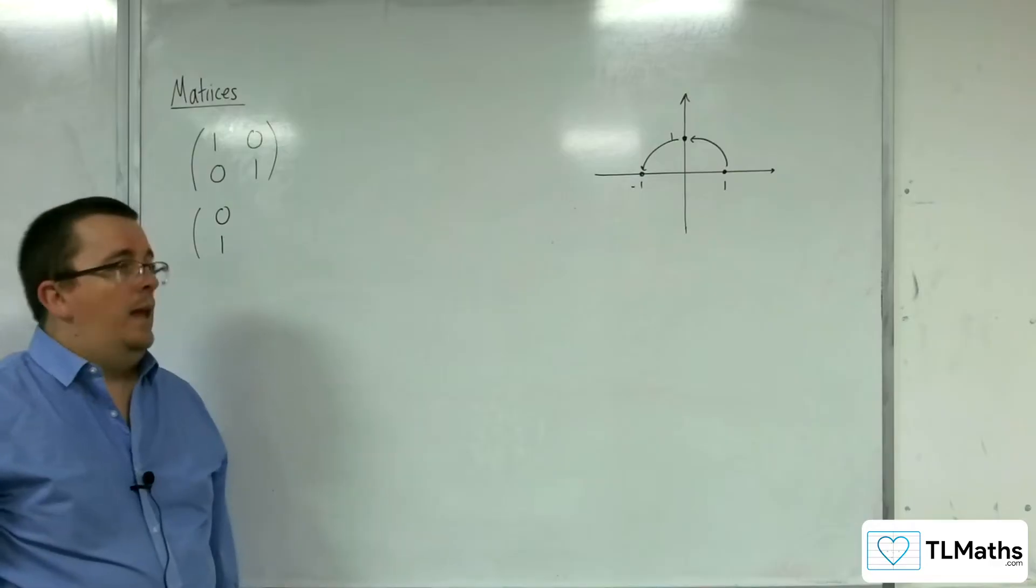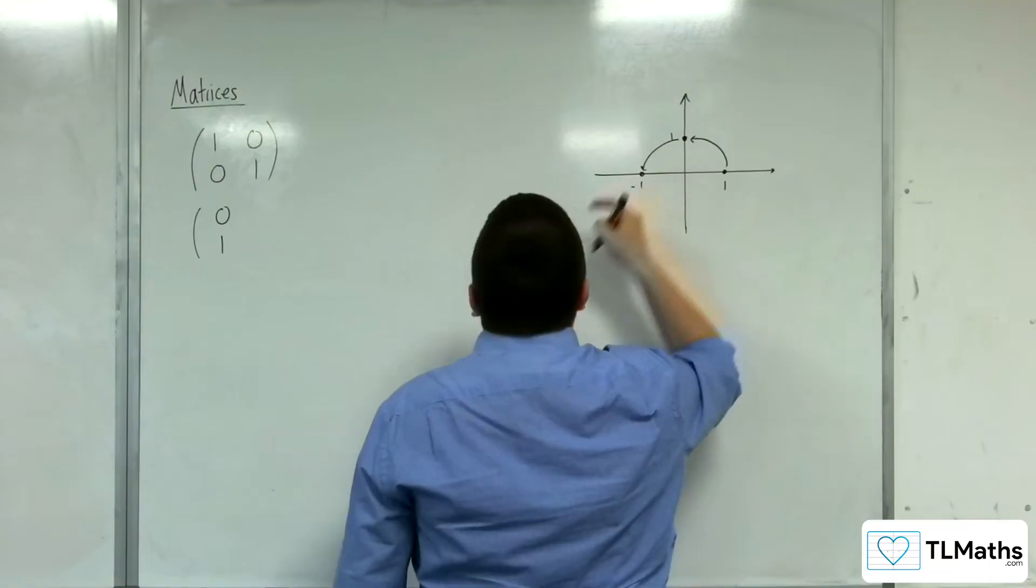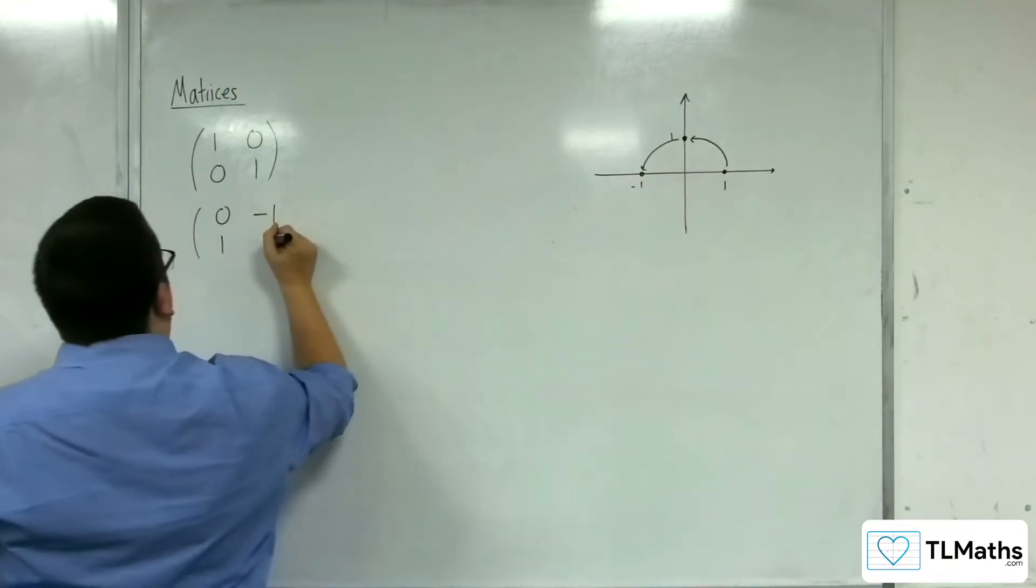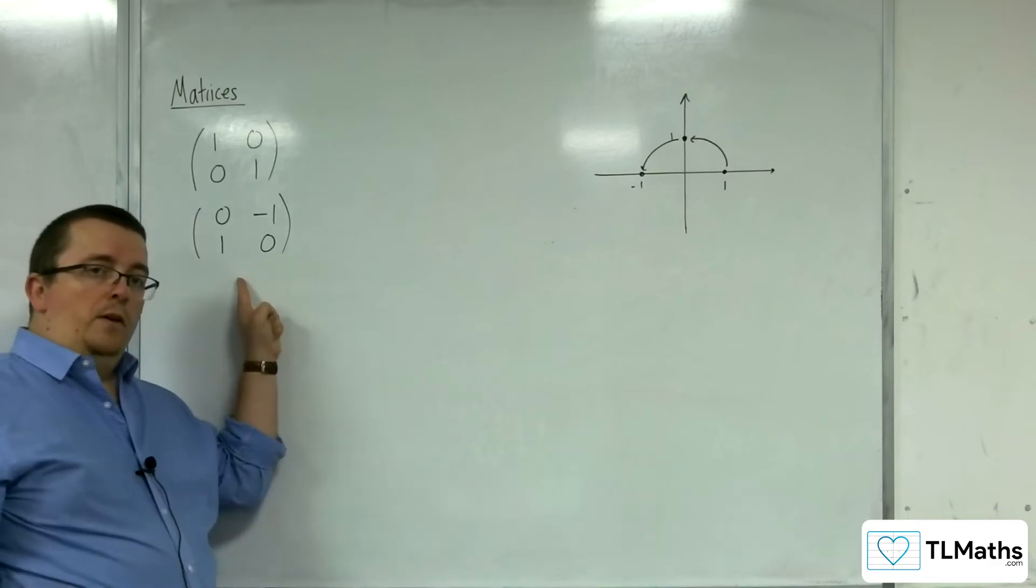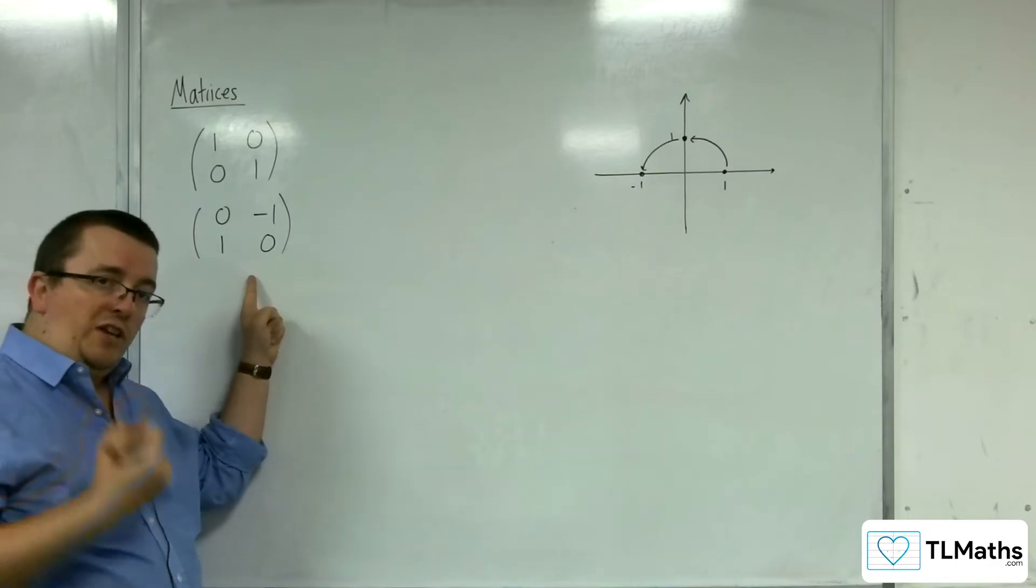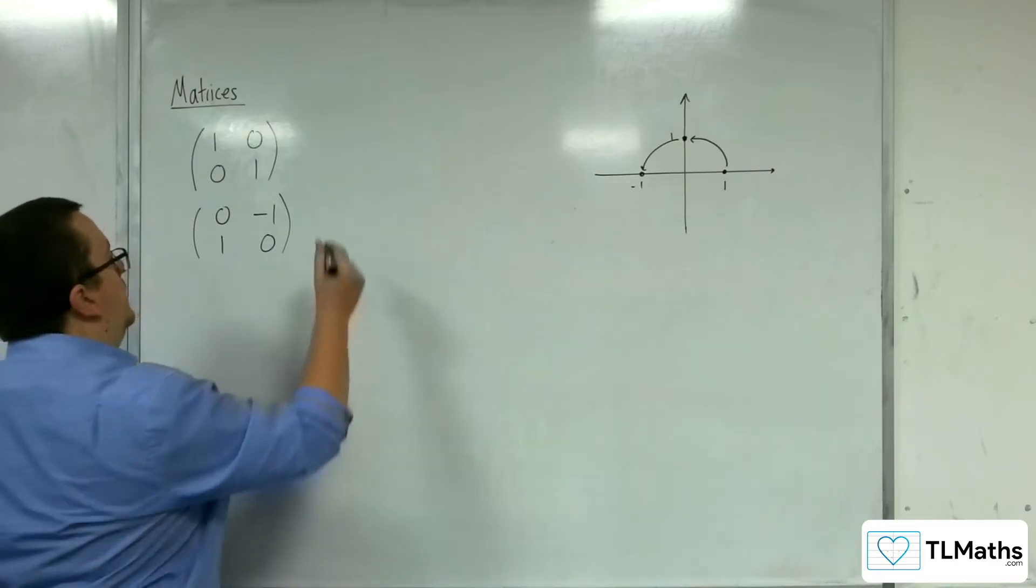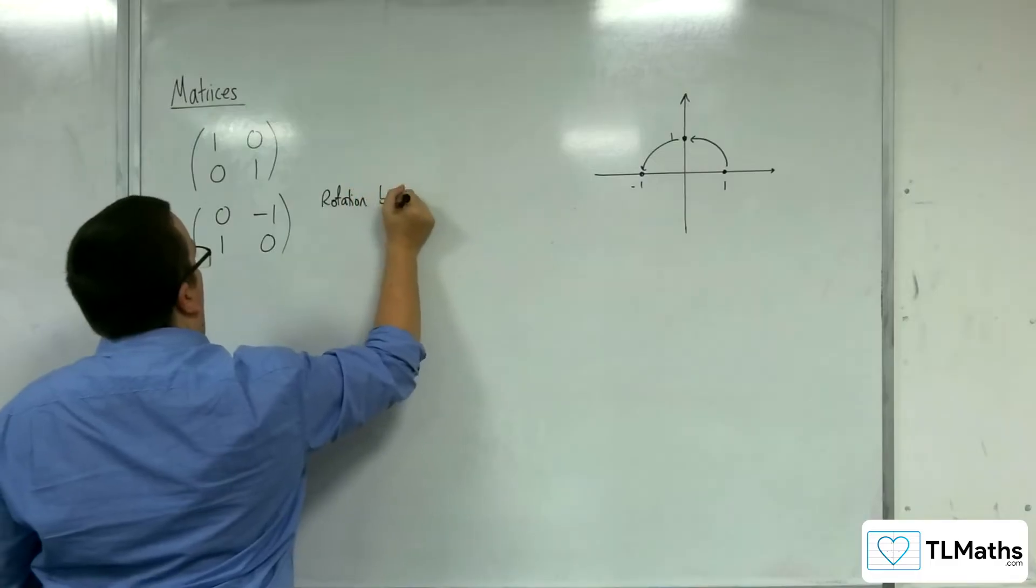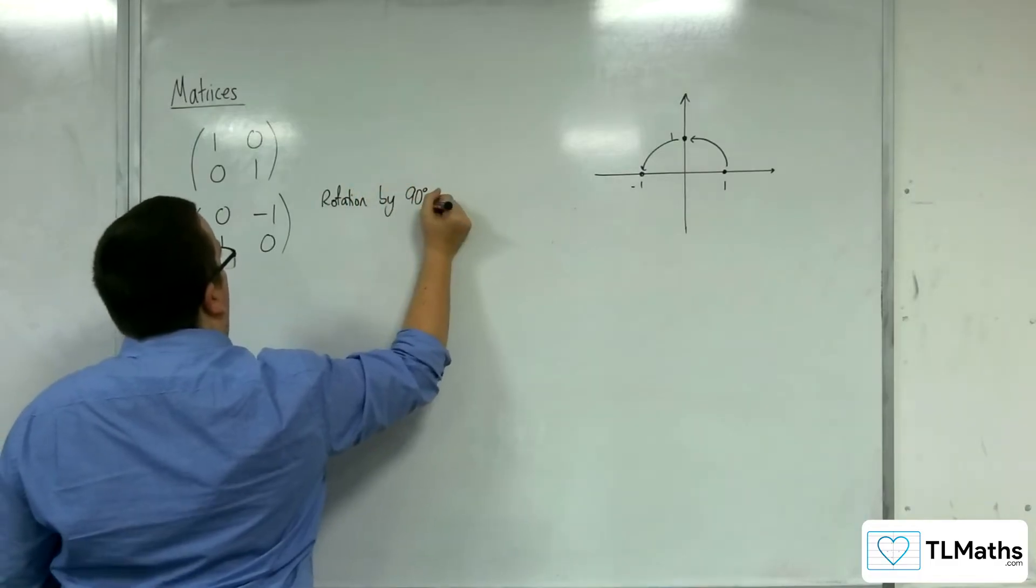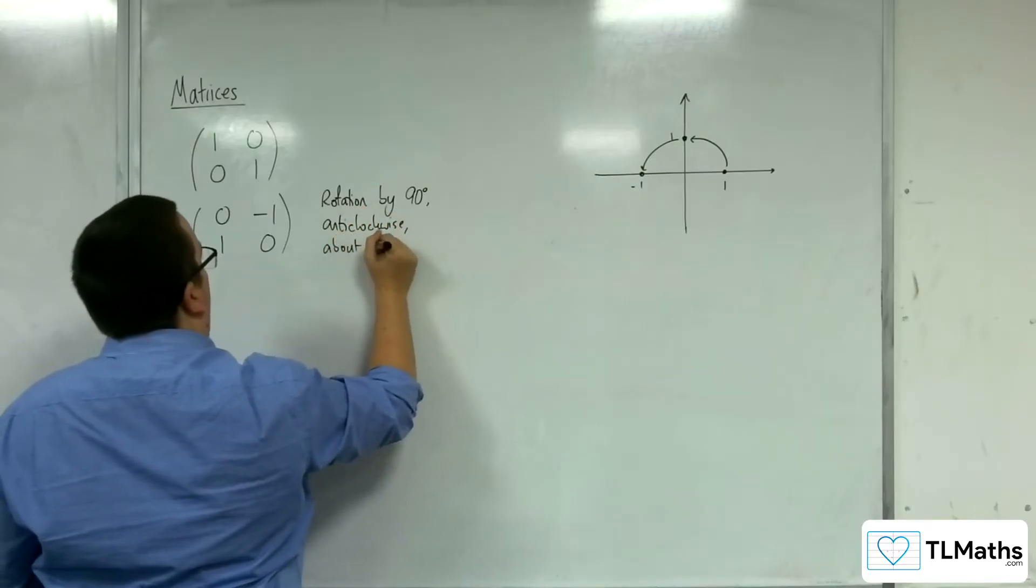And the point that was at 0, 1 would now be at minus 1, 0. And so this must represent a rotation by 90 degrees anticlockwise about the origin.